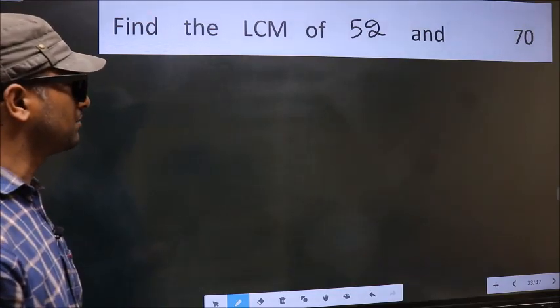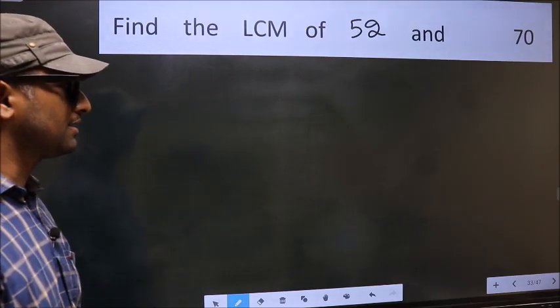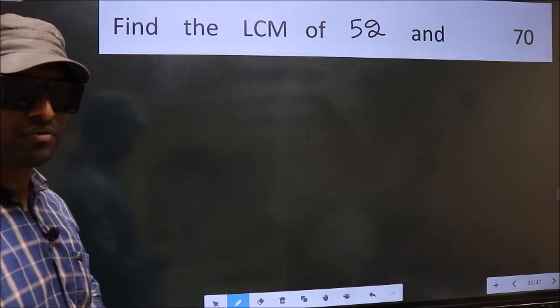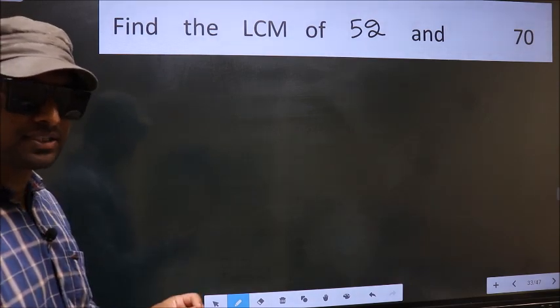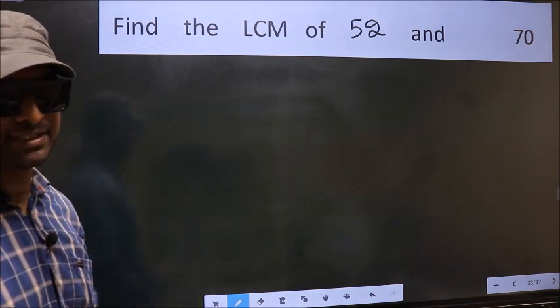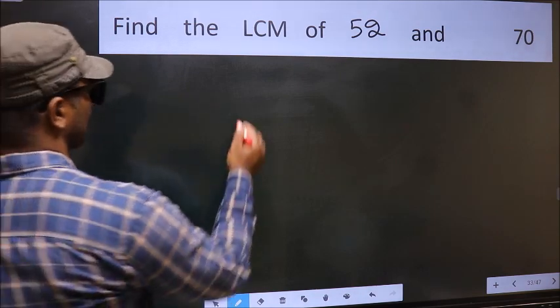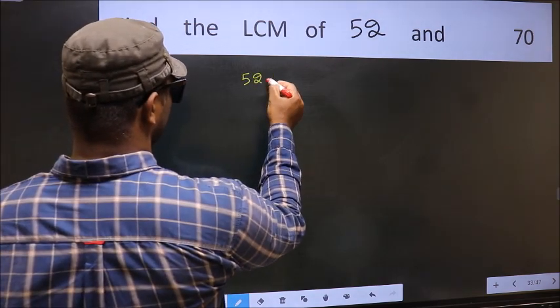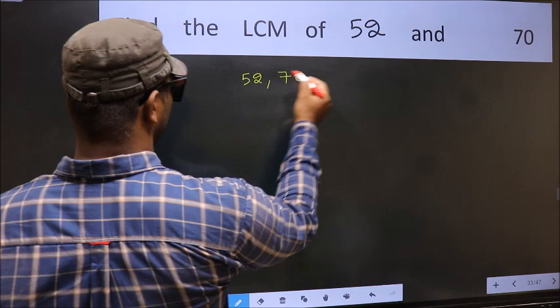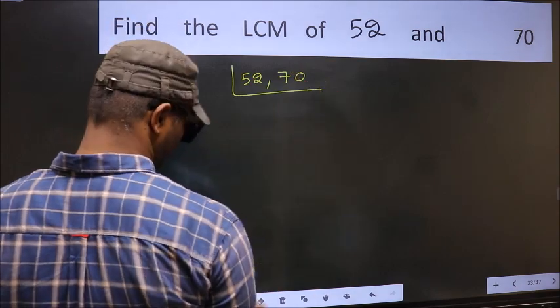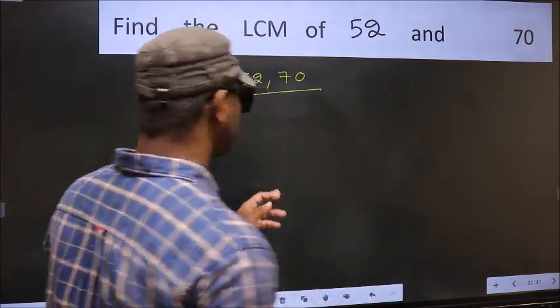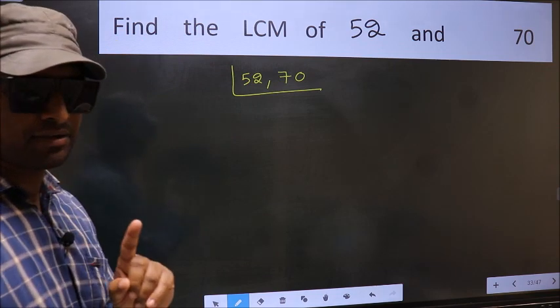Find the LCM of 52 and 70. To find the LCM, first we should frame it in this way: 52, 70. This is your step 1.